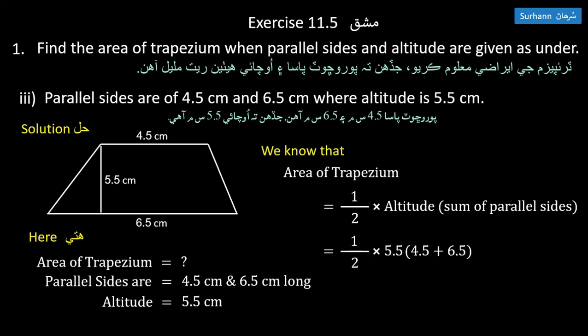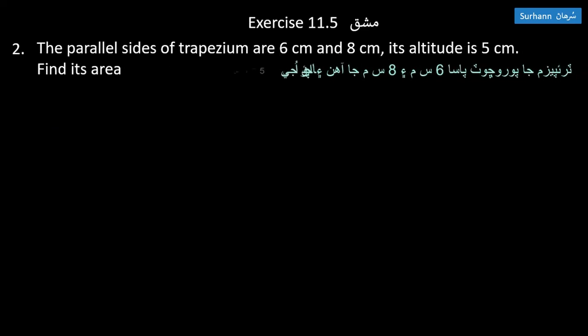Put the values in the formula. One-half times 5.5 times 11 equals 30.25 square centimeters. Area of trapezium is 30.25 square centimeters.